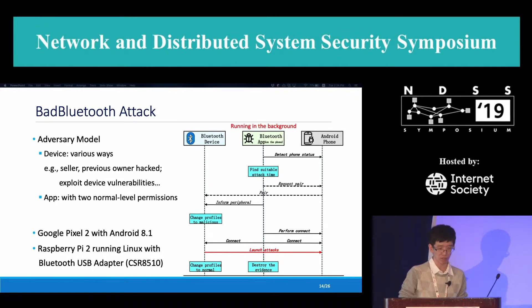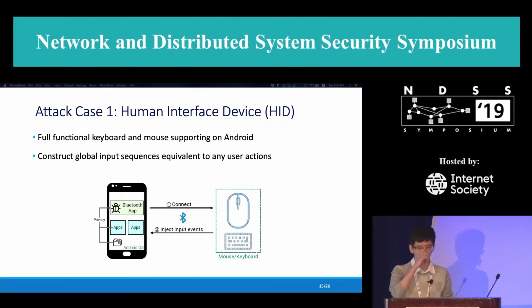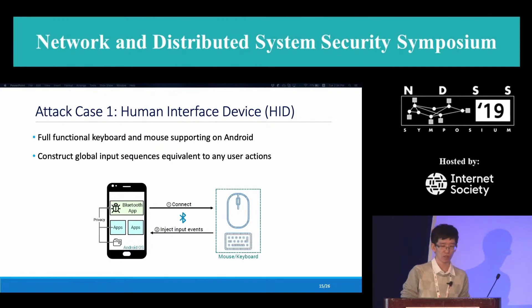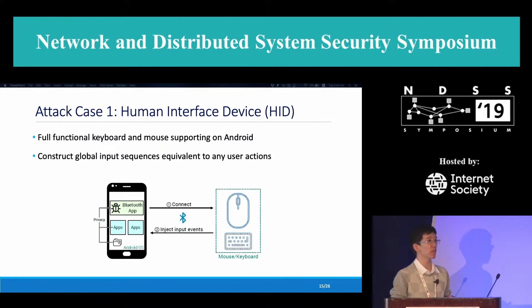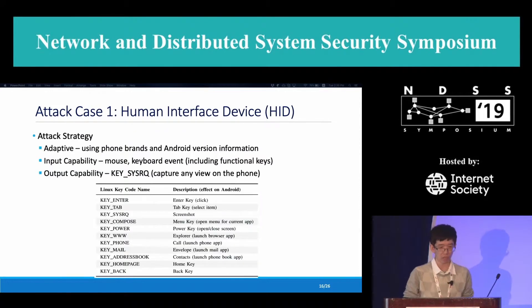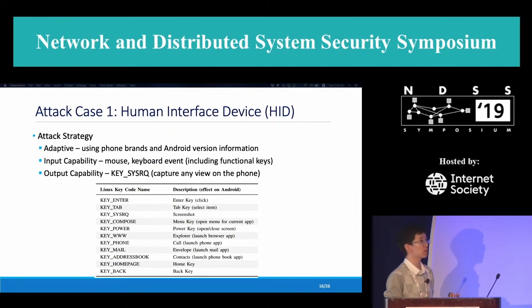We implemented our attack using a Google Pixel 2 with Android version 8, and simulated the device using a Raspberry Pi running Linux. The first and most dangerous attack case: if we change the profiles to the human interface device (HID), we can inject a global input sequence equivalent to any user actions. Android supports a fully functional keyboard and mouse on the system. We found several functional keys which can help our attack — we can utilize special keys to directly return to the home screen or select items on the phone screen.